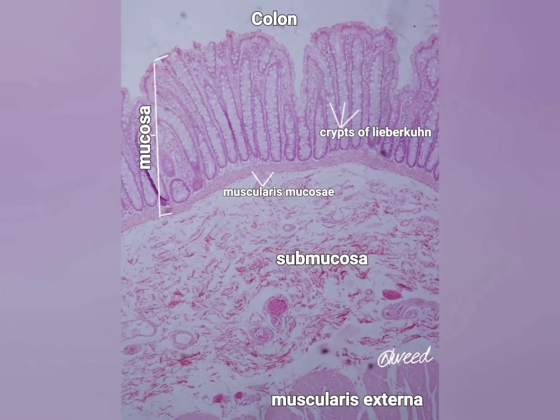This is light microscopy of the colon. The wall of the colon consists of four layers: mucosa, submucosa, muscularis externa, and serosa or adventitia.